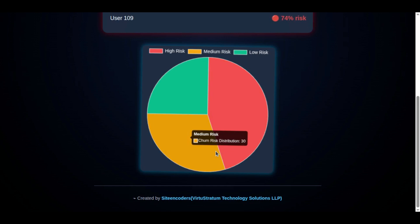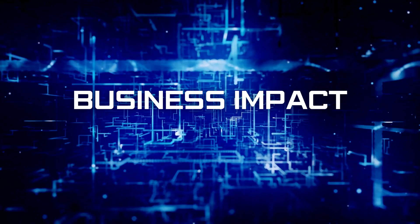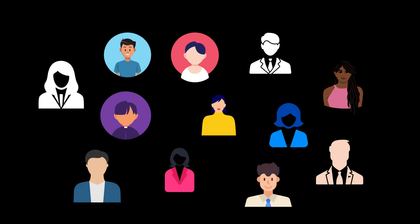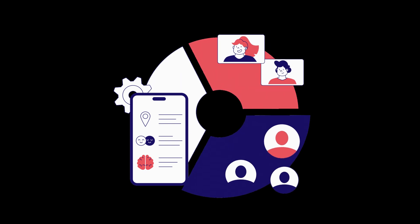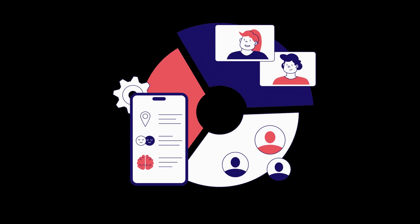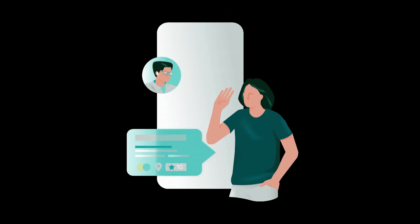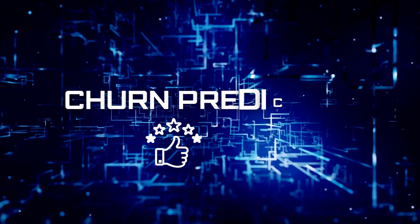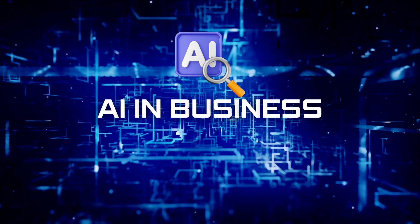The result is a weekly churn risk report that helps your team act before it's too late. One of our SaaS clients used this to flag 12 customers likely to cancel. Their success team reached out, solved small issues, and saved nine of them in just two weeks. It's easier and cheaper to keep a customer than to win a new one — that's why churn prediction is one of the most ROI-positive use cases for AI in business.